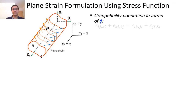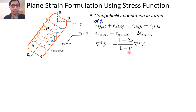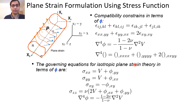For the compatibility equation, it takes a compact form. After all substitutions, we get delta4(phi) equal to minus (1 minus 2nu) divided by (1 minus nu) times delta(v). Delta4 is the biharmonic operator, so the governing equation for isotropic plane strain theory in terms of phi becomes this expression.